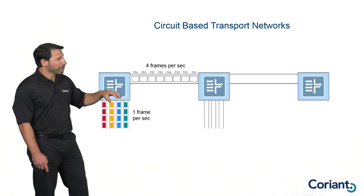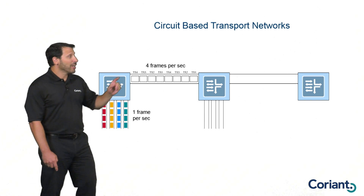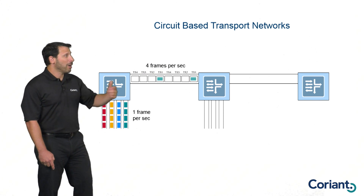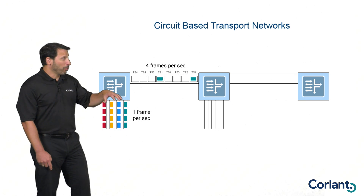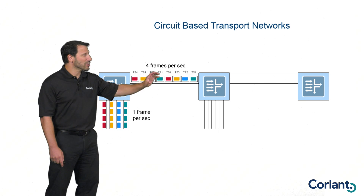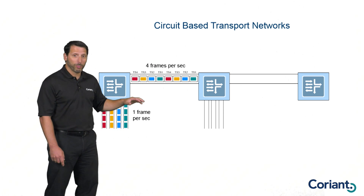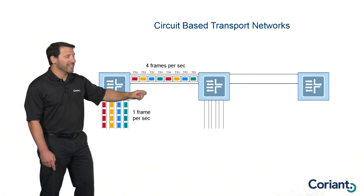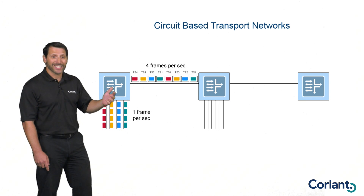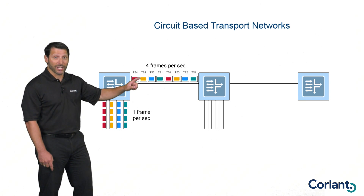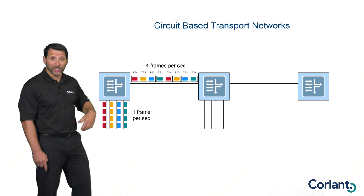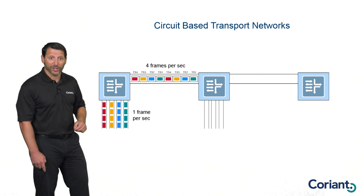I'll map the traffic from each of these individual clients onto a specific time slot. So the traffic coming from the first port I'll map to time slot one, from port two to time slot two, and so on. I can map them to any time slot, but each time slot is associated with a specific port and provides the same speed of service. I'm transmitting frames at the same rate on that time slot as the incoming signal — four frames per second, which is the combination of these four physical interfaces at one frame per second.